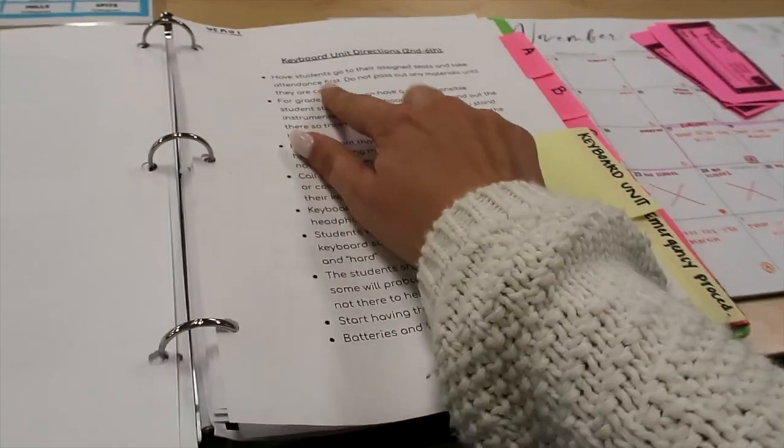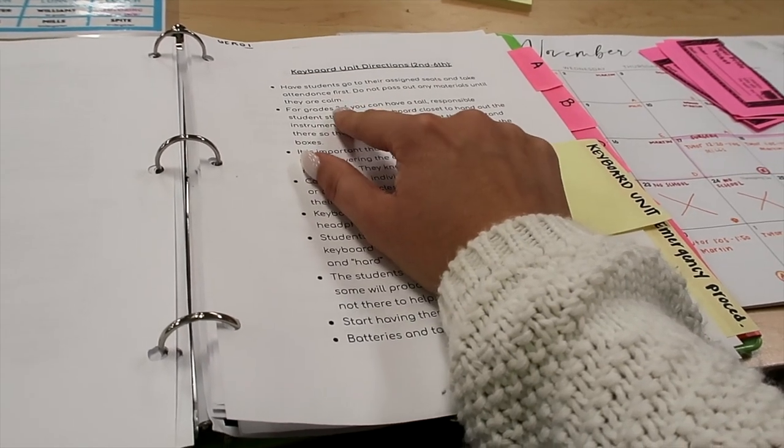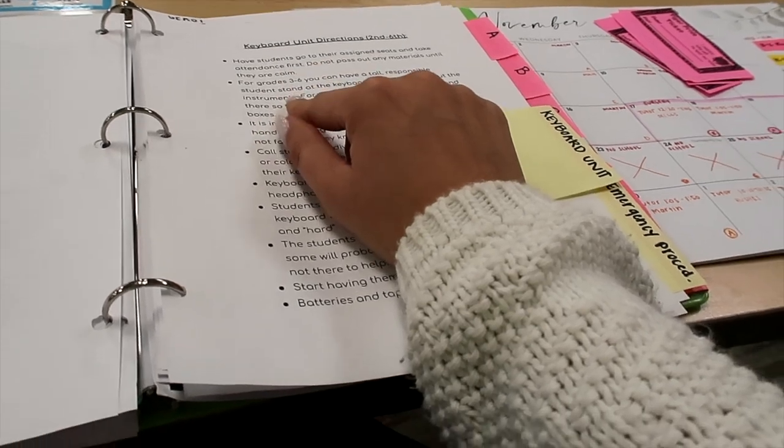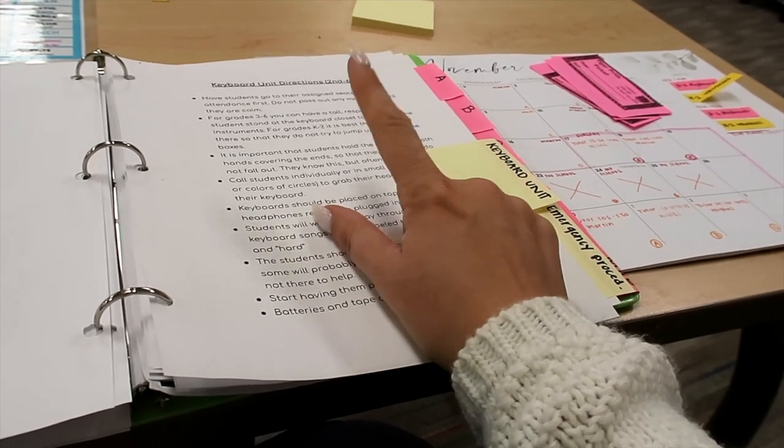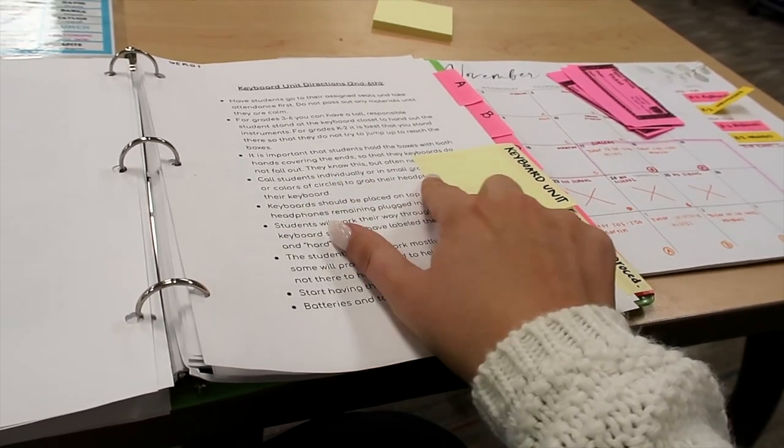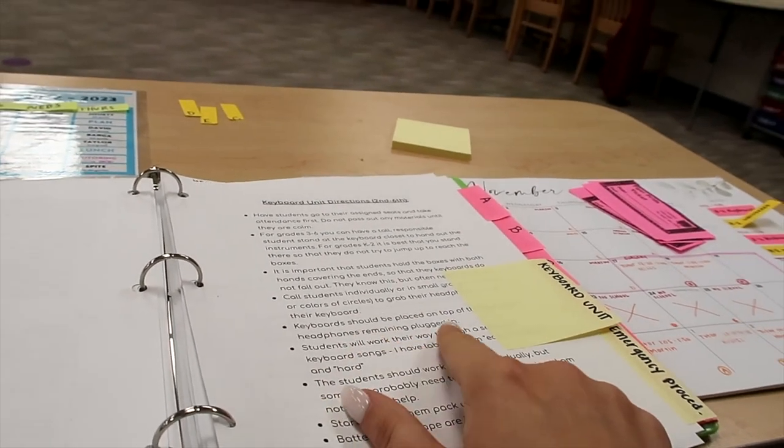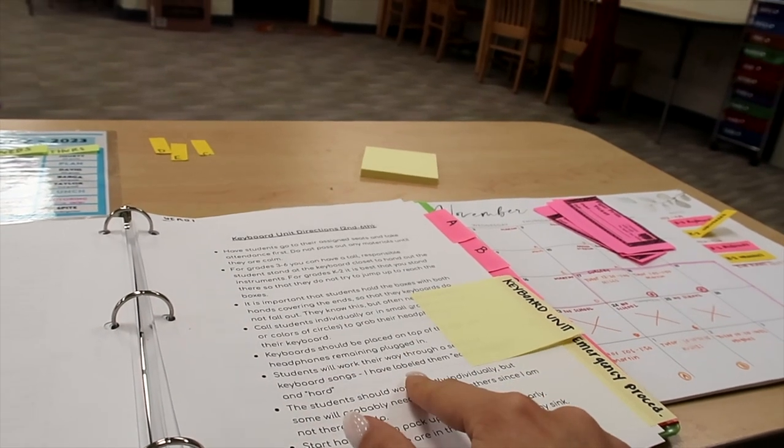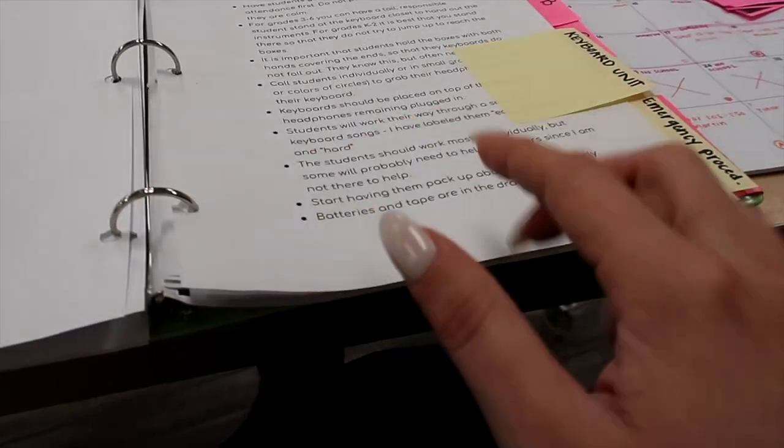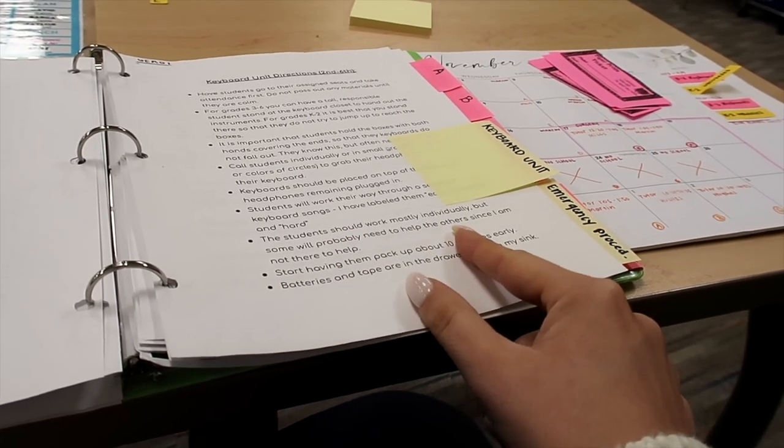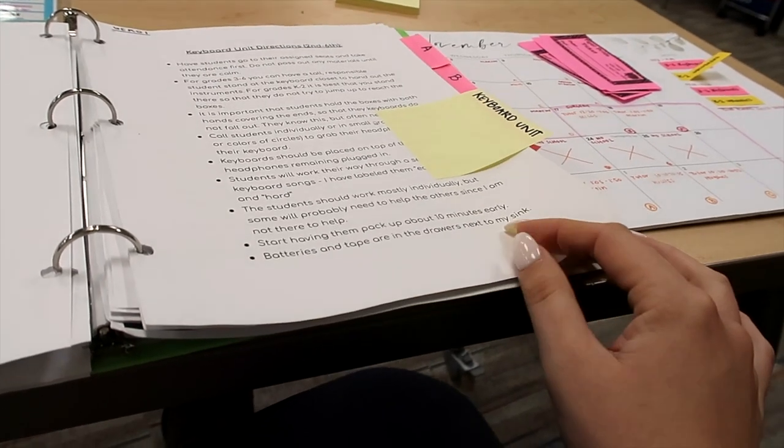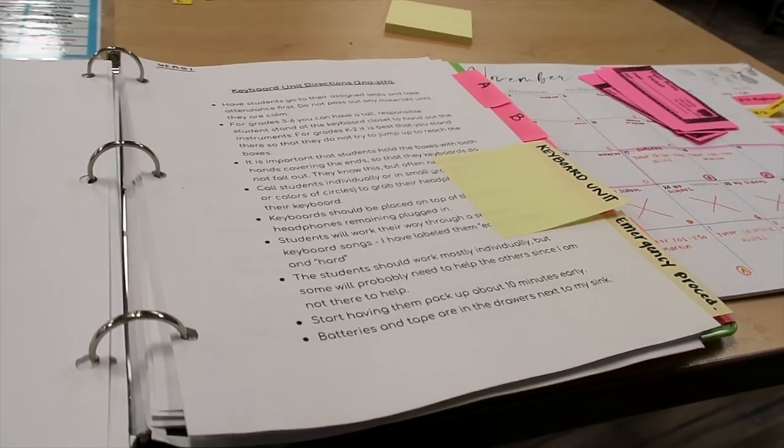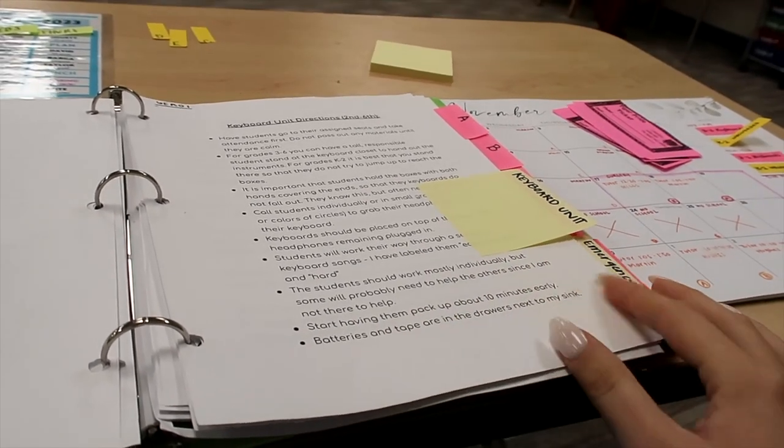Here are the instructions for my keyboard unit. Have students go to their assigned seats. Do not pass out any materials so they are calm. That's very important. For grades 3 to 6, I'll explain to her that she doesn't need to do this anymore because the little kids can all reach their instruments now. It's important that students hold the boxes with two hands so that the keyboards do not fall out. They know this, but they often need reminders. Call students individually or in small groups, like by the colors of their circles, to go get their headphones and their keyboard. Keyboards should be placed on top of the box and headphones remain plugged in. Students will work their way through a series of keyboard songs. I have labeled them easy, medium, and hard. The easy ones are up there on my sink. The kids know, they've been going to them already. The students should work mostly individually, but some will probably need help. If she's able to observe me today, I am going to teach her the same thing I teach them, which is D is in the doghouse and how to find the keys after that. But she might know that. I don't know what her skills are with the piano. Start having them pack up about 10 minutes early. Batteries and tape are in the drawers next to my sink.